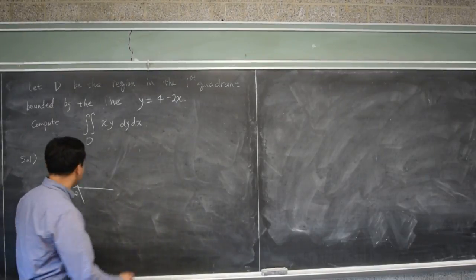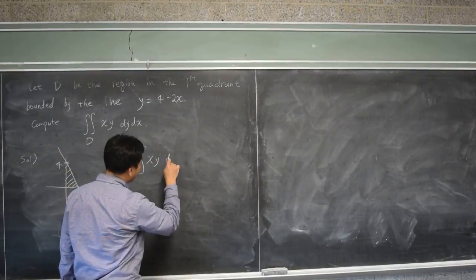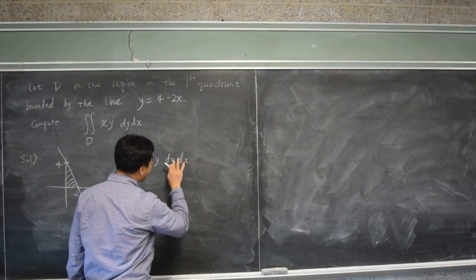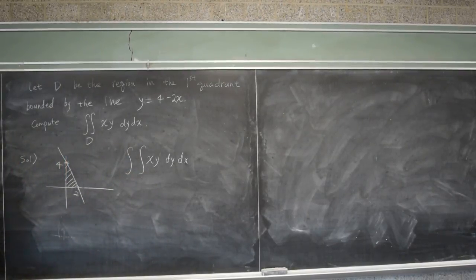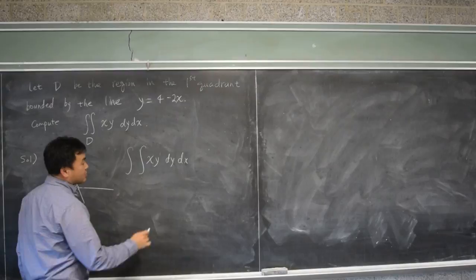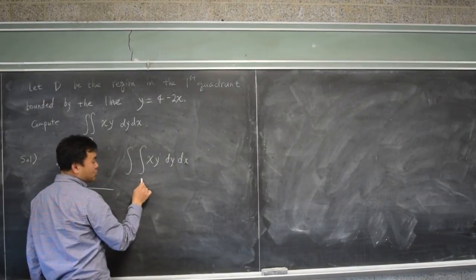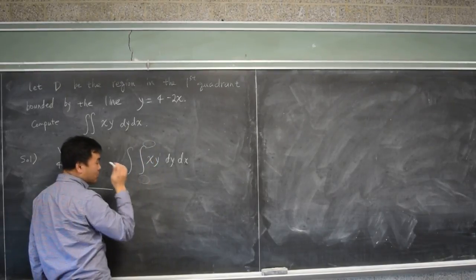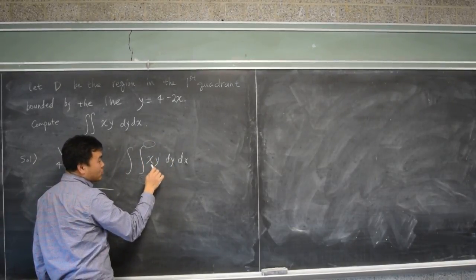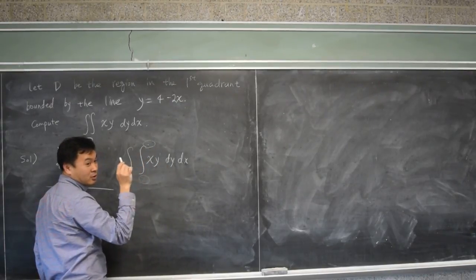So to actually do the calculation, the hardest part is figuring out what to put at the bounds. And it goes like this. If you have y dy, that means what's in here should be plugged in, so if you have dy here, you should first integrate this by y.